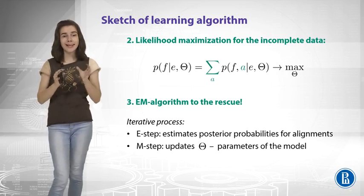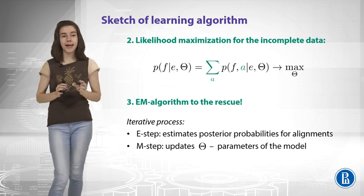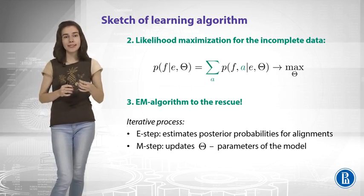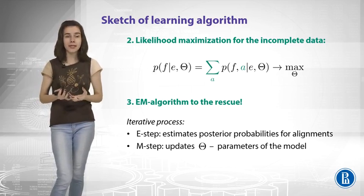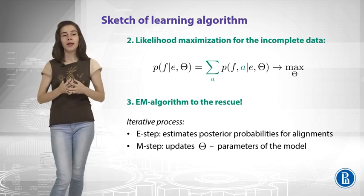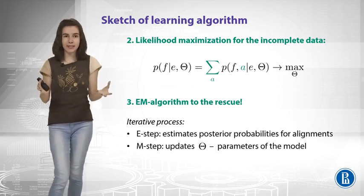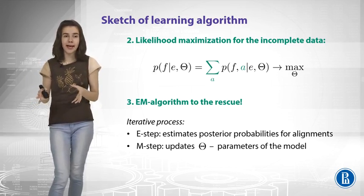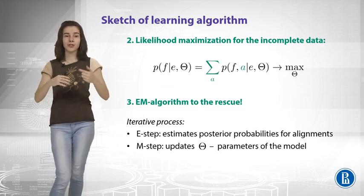So EM algorithm, just to recap, is an iterative process that has E-step and M-step. The E-step is about estimates for your hidden variables. So the E-step will be what are the best alignments that we can produce right now, given our parameters.